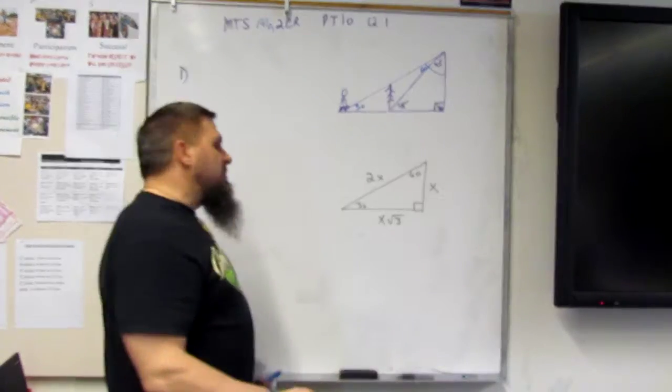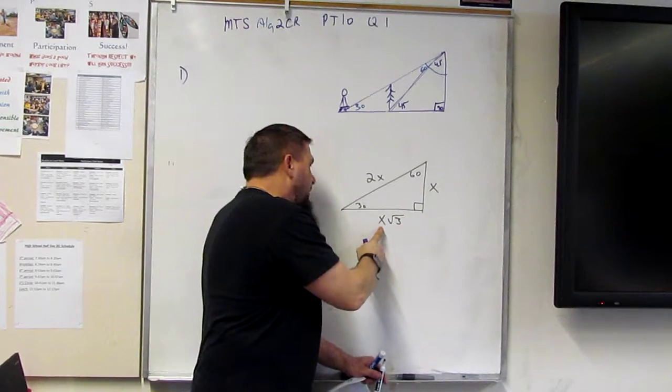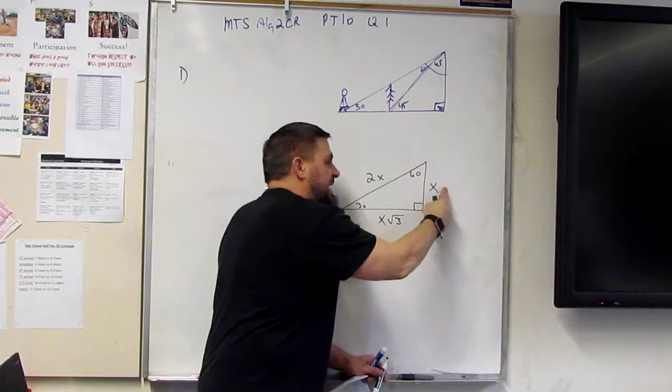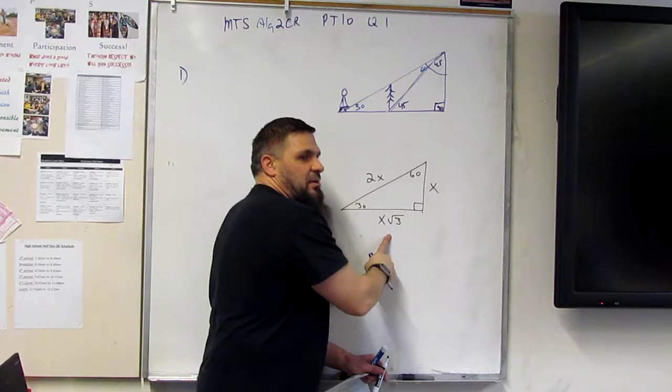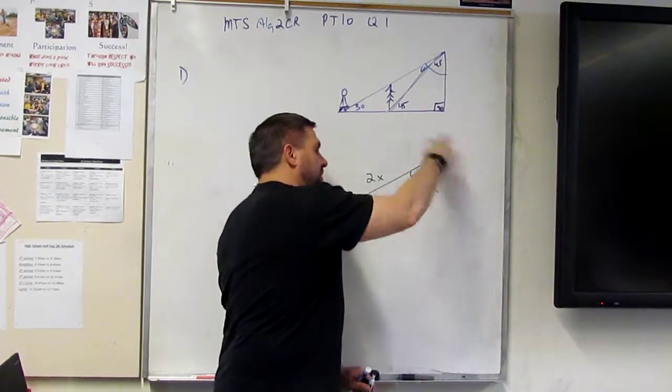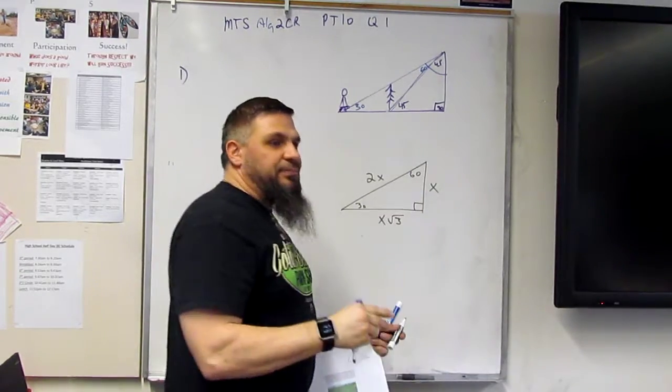So for any 30-60-90 triangle, if I know this is 5, then this is 5 square root 3, and this is 10, because it's 2 times 5. If this is 18, then this is 36, and this is 18 square root 3. It's real simple, right? So I have to learn this before I can know these. Does that make sense? If I know this, it's cake.